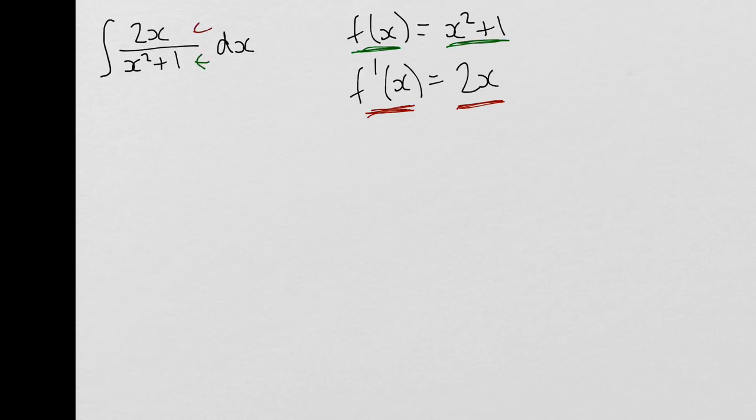So our standard result would just be ln|x² + 1| + c. And that's it. That's the principle we're looking at to begin with. Let's take a look at one other example.